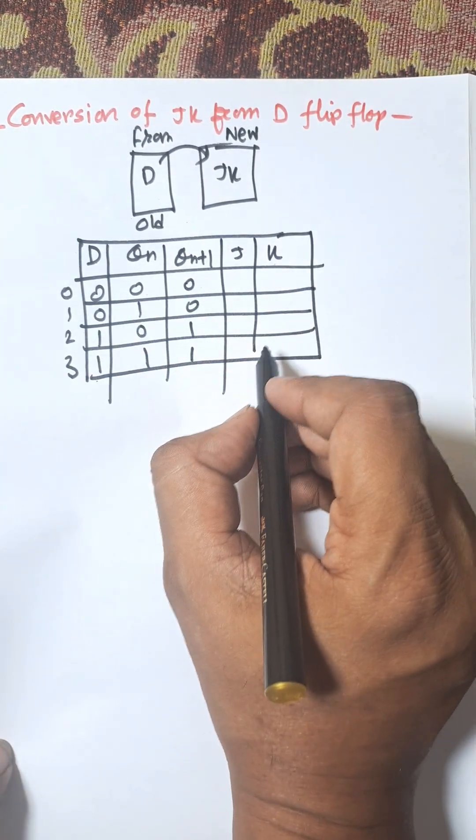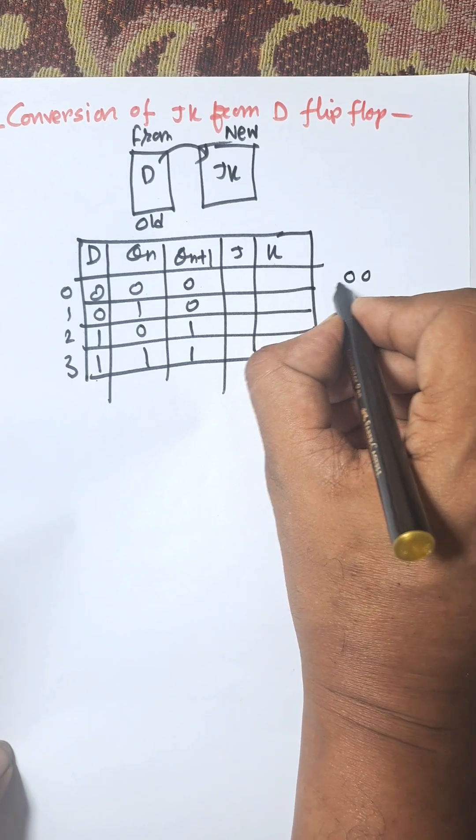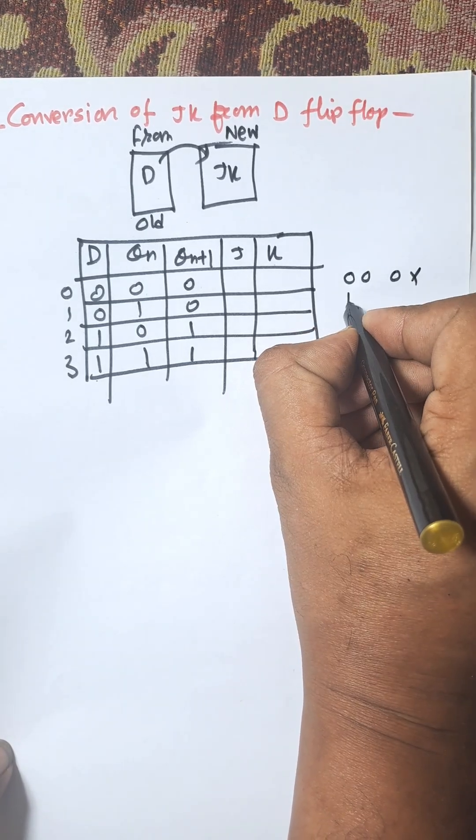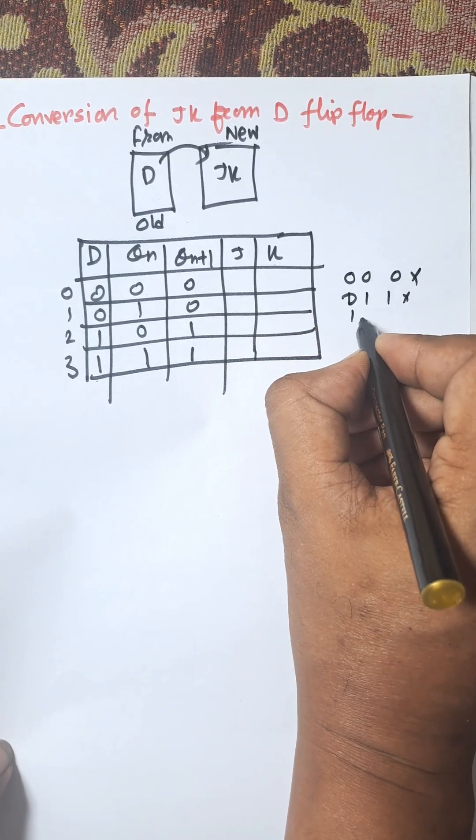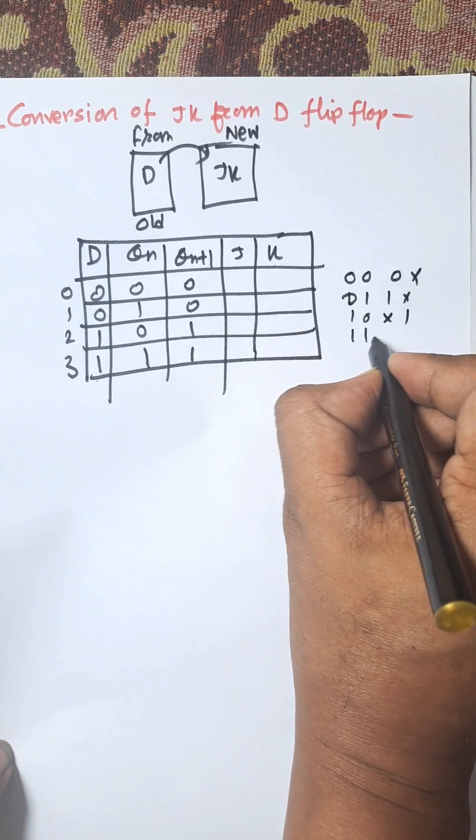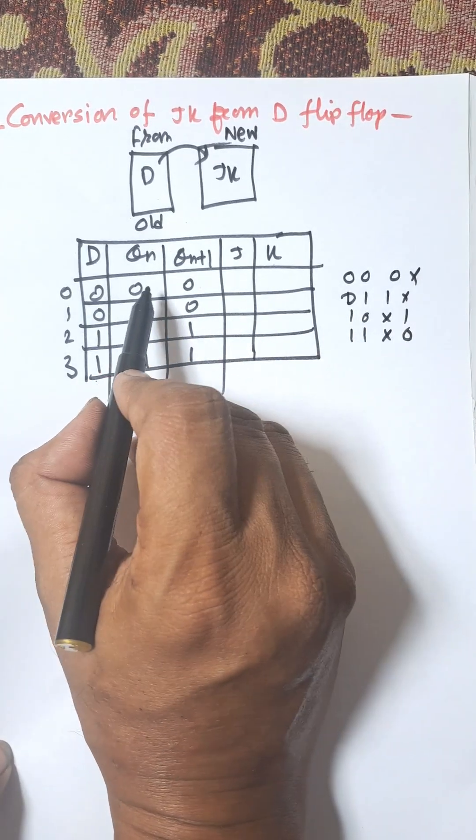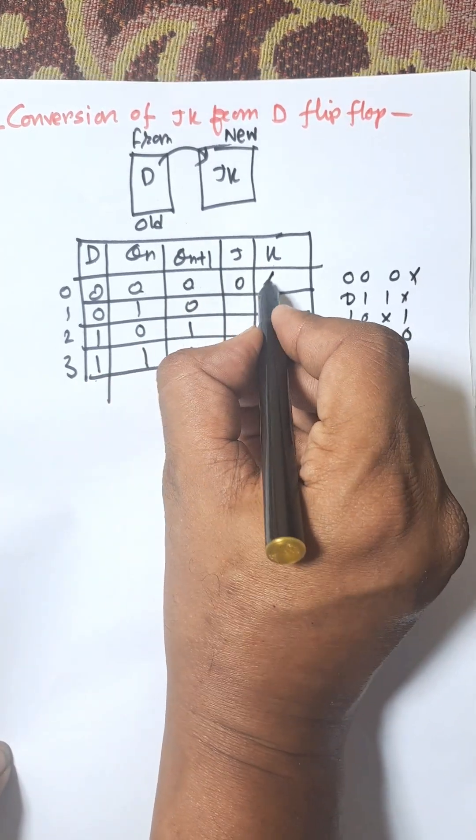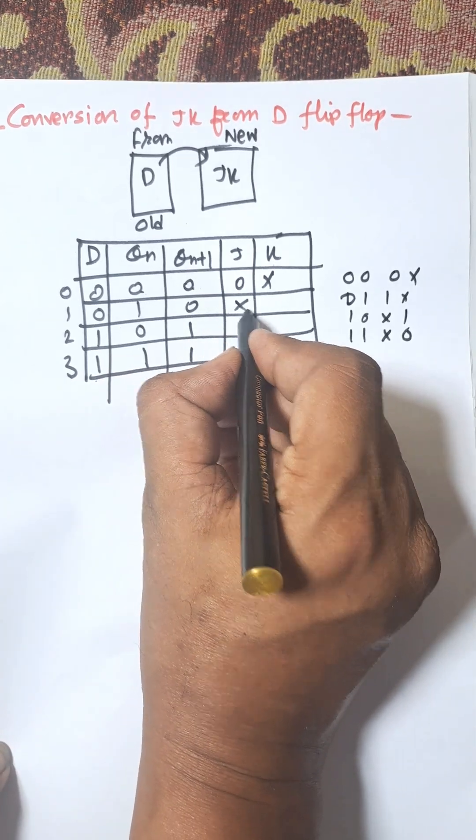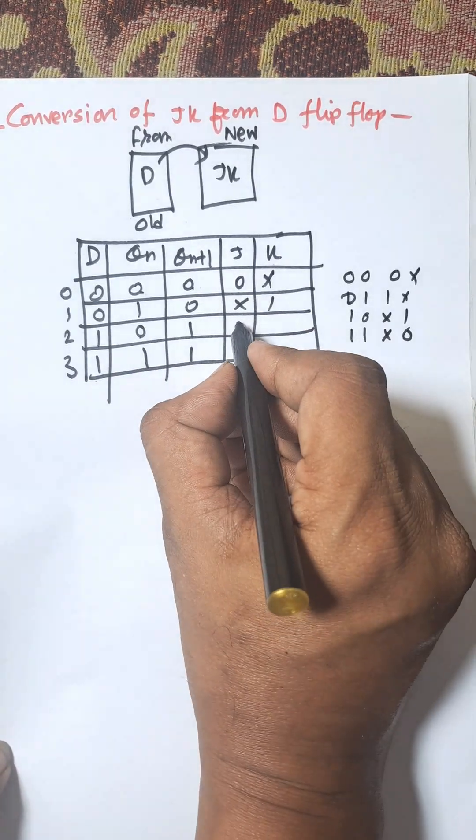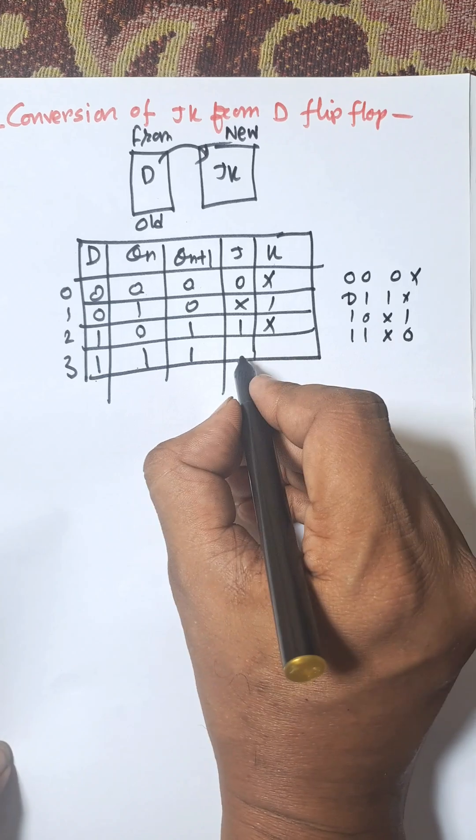Now we need to construct the excitation table. We know the excitation table for JK is 0 0 → 0 X, 0 1 → 1 X, 1 0 → X 1, and 1 1 → X 0. That is for 0 0 → 0 X, 1 0 → X 1, here 0 1 means 1 X and 1 1 means X 0.